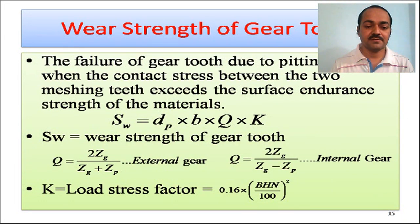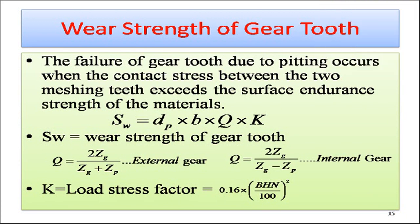Now let's examine the wear strength of the gear tooth. The failure of gear teeth due to pitting occurs when the contact stress between two meshing teeth exceeds the surface endurance strength of the materials. When the pinion and gear exert force on each other, the surface is deteriorated and small pits are formed, with surface material being removed. This is what is called wear. The wear strength can be calculated using a specific equation.